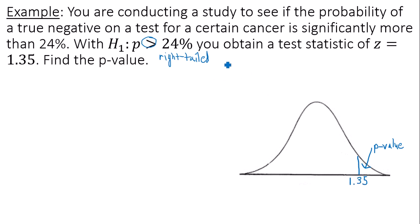So anytime I'm dealing with a population proportion, I am dealing with the standard normal distribution. So what I have to do is I have to find the area under this curve from 1.35 to the right-hand side.